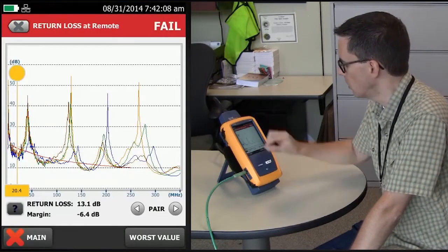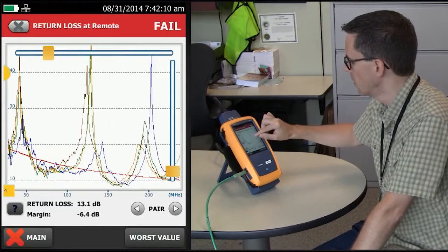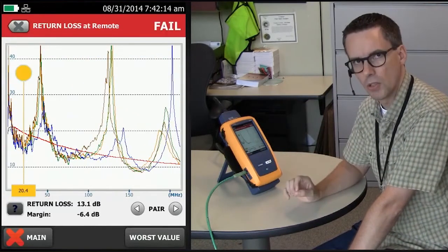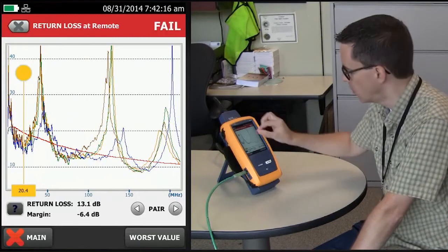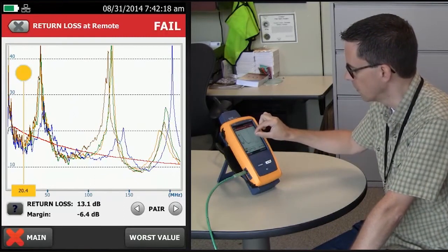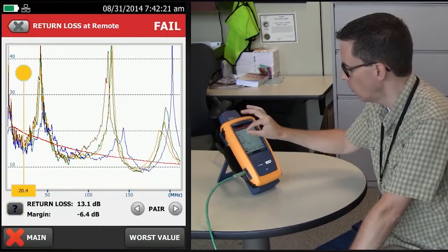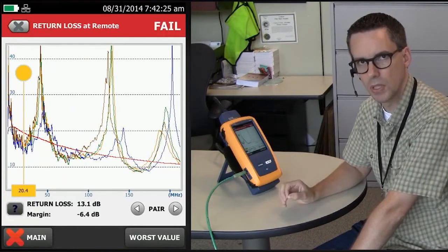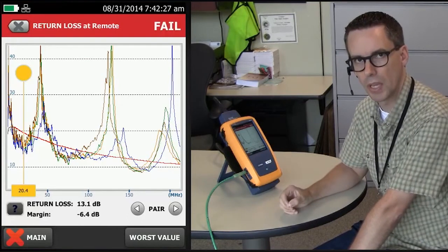Going back to our return loss trace, pinch and zoom in a little bit. You'll notice with this particular trace that all four pairs are pretty much following each other. As a general rule, when you see all four pairs following each other and they're failing, particularly at the lower frequencies, that suggests there's water in the cable.